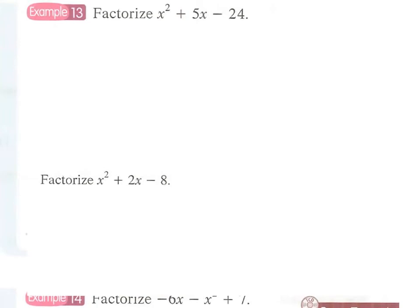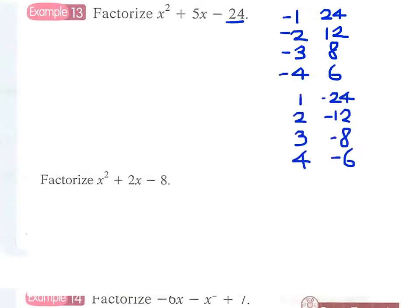We can learn more by simply doing more examples on the cross method. We can see that there are quite a number of factors in the number 24: we can have 1×24, 2×12, 3×8, 4×6. Note that the last term is a negative number, minus 24, therefore either one number will be negative and the other positive. We finally come up with eight pairs of factors.